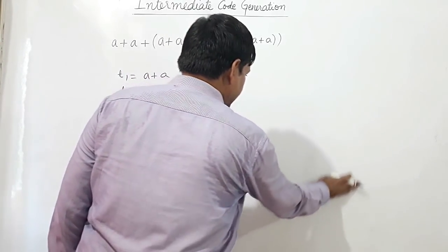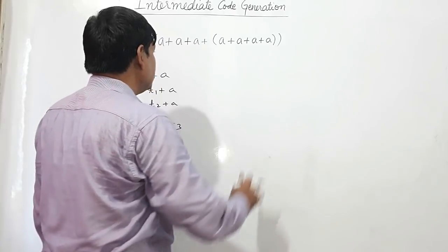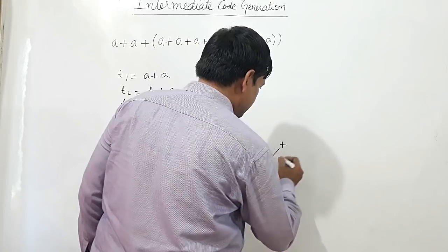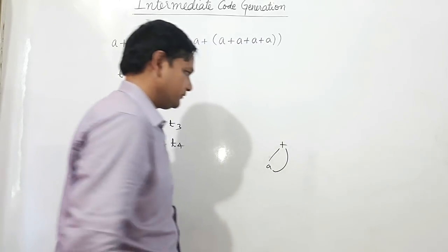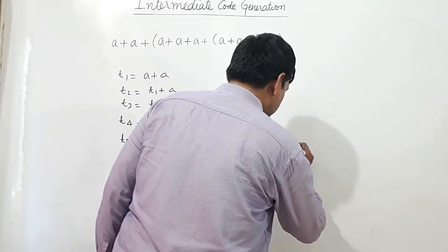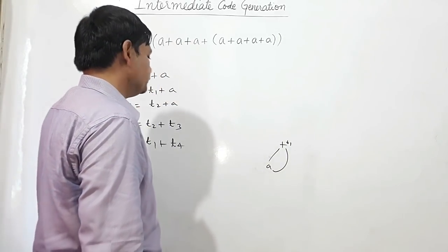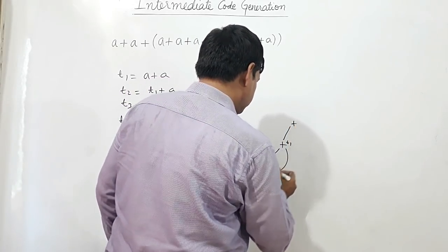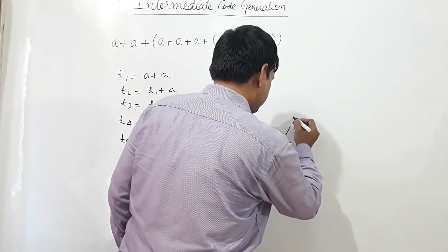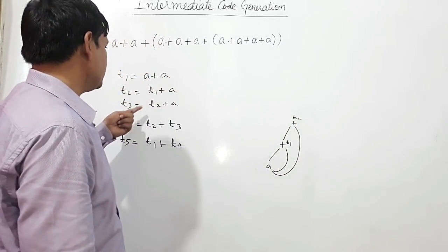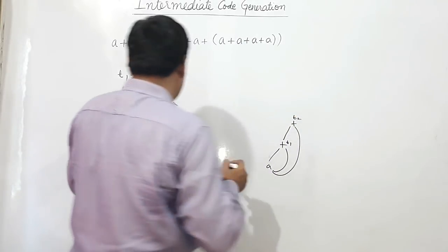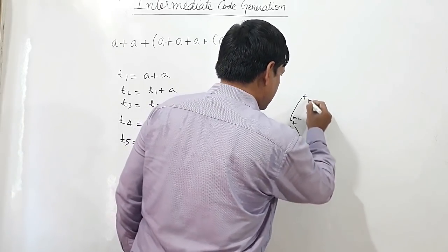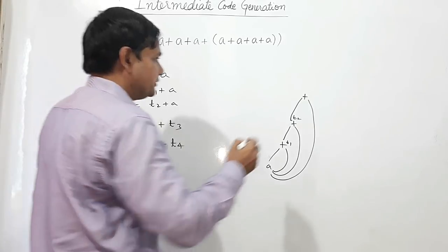So we shall see how to construct the directed acyclic graph for this expression. t1 is a plus a — I am taking one a from here, this is t1. Now t2: we are adding t1 with a, which is t2. Now t3: I am adding one more a with this t2. So t2 is here and one more a is here. The result is t2 plus a, which is t3.